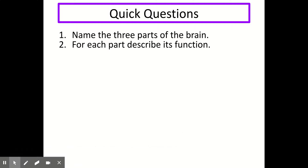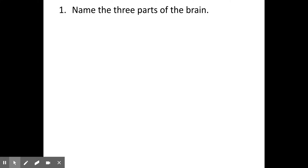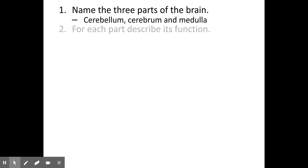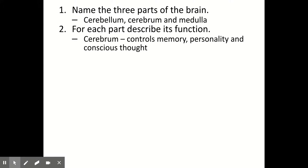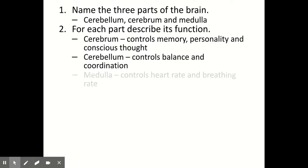Let's try some quick questions. Pause the video here, try the questions by saying them out loud or writing them down, and when you're ready, play the video and we'll go through the answers. The three parts of the brain are the cerebrum, the cerebellum, and the medulla. The cerebrum controls memory, personality, and conscious thought. The cerebellum controls balance and coordination. The medulla controls heart rate and breathing rate.